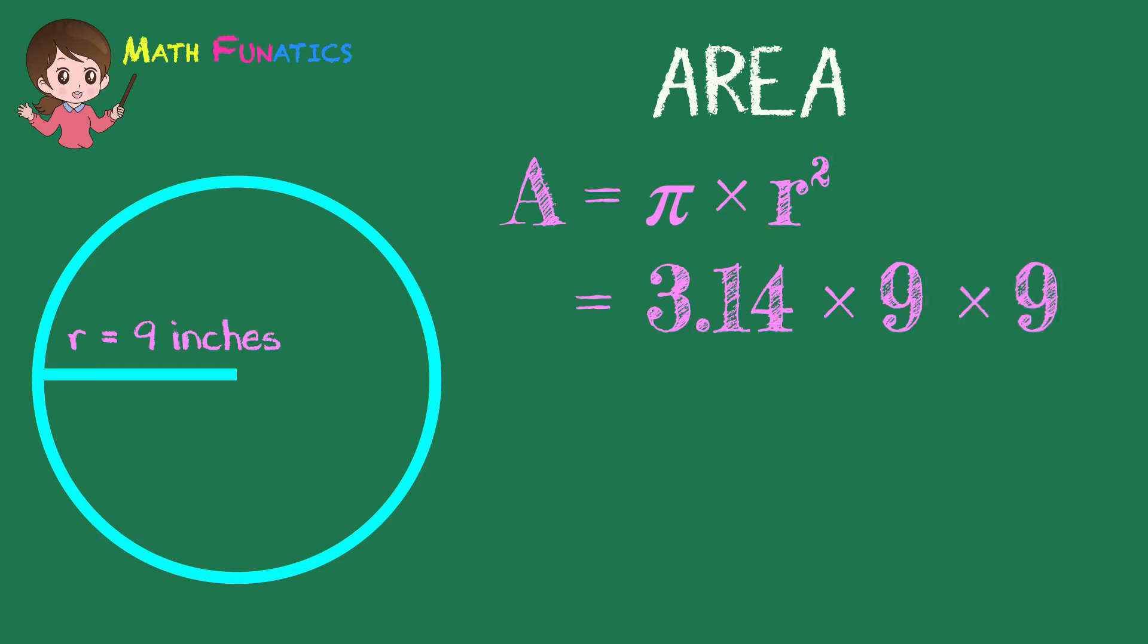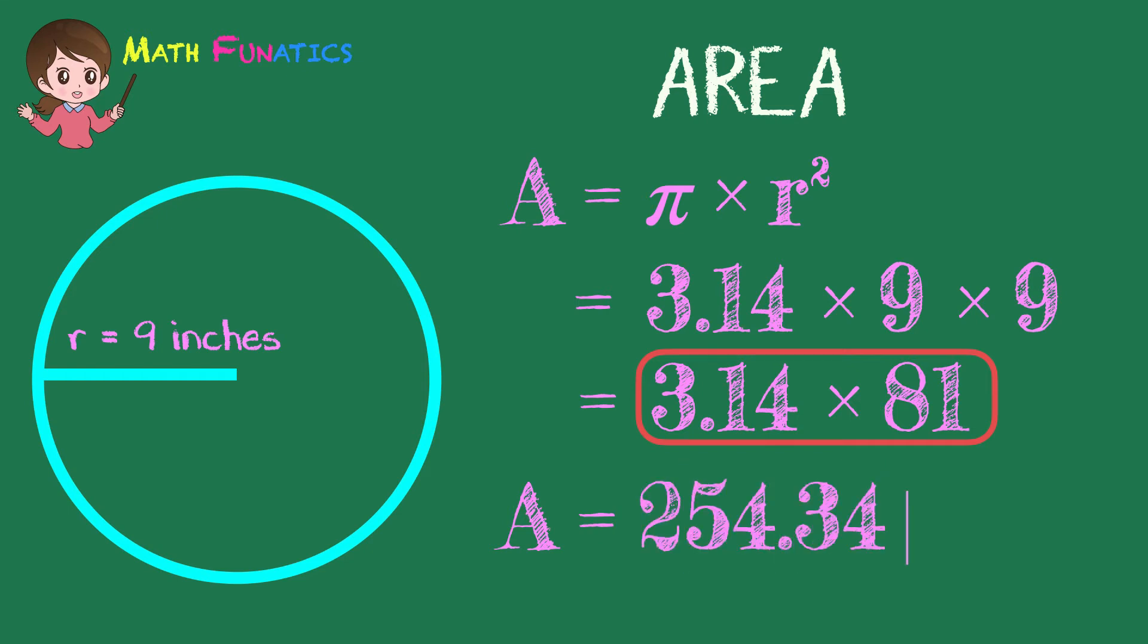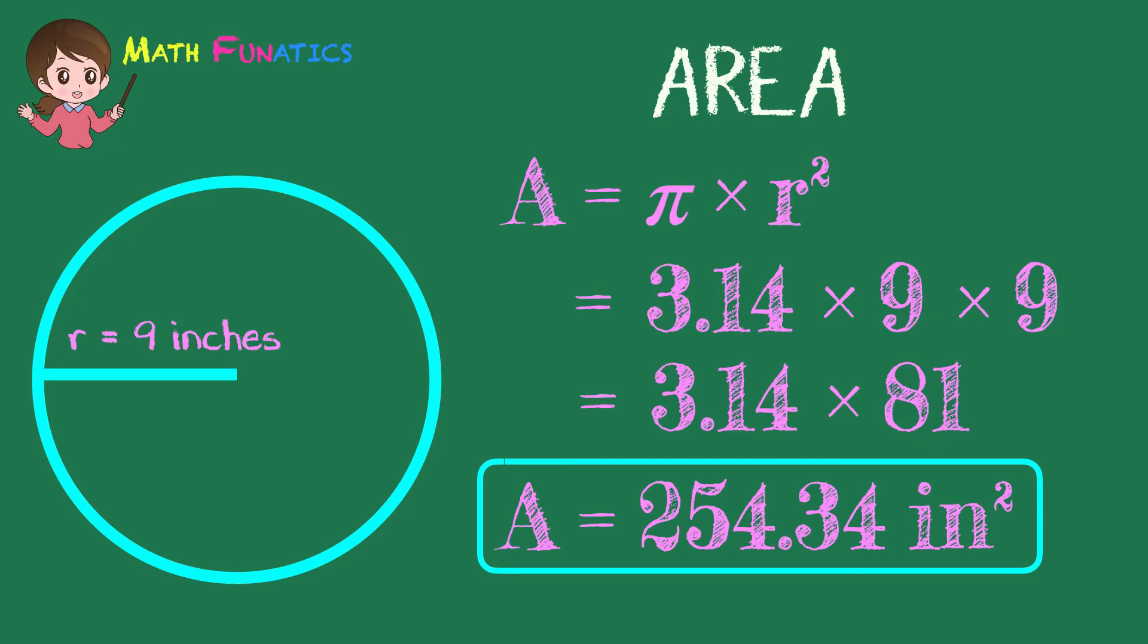Bring down 3.14, then get the product of 9 times 9, which is 81. Multiply 3.14 by 81 and get 254.34. Finally, the area of a circle with a radius of 9 inches is 254.34 square inches.